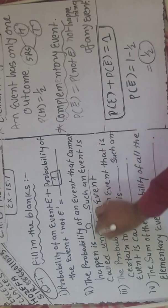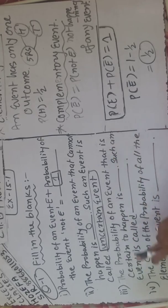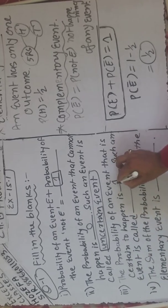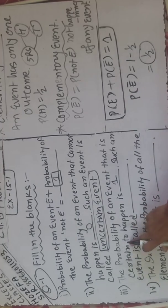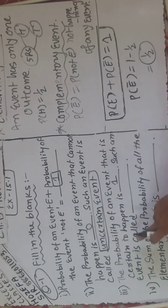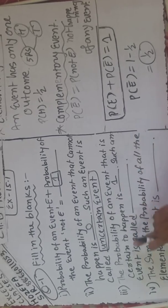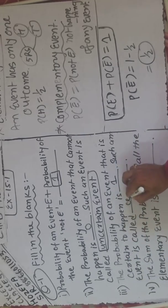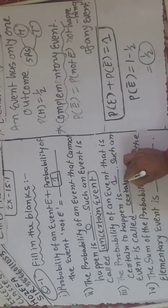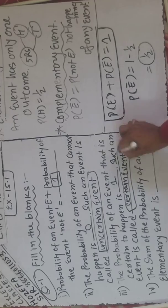And probability of event that is certain to happen — iski probability always 1. Jaise maine bataya tha ke sun rises in the east — sun always east mein rise hota hai, yeh truth hai aur hone ka hi yeh kal bhi hona hi hai. That's why iski probability kya hogi? One. And such an event is called a certain event.